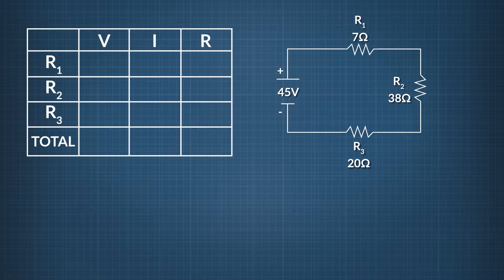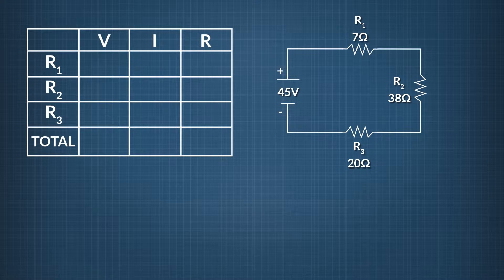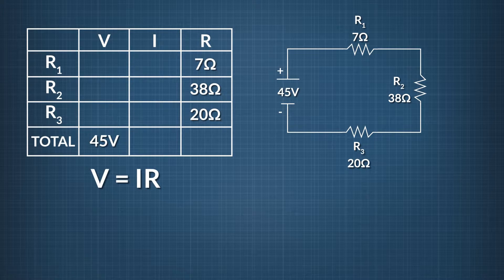This VIR chart is for a circuit with 3 resistors — R1, R2, and R3. We want to fill in the voltage across them, the current through them, and the resistance of each one. In the bottom row, we'll figure out those values for the entire circuit. The first step is to fill in any blanks in the table we can. We know all three resistor values and the overall voltage. Using Ohm's Law and our knowledge of circuits, the only thing we can do now is add up all the individual resistors to figure out the total circuit resistance.